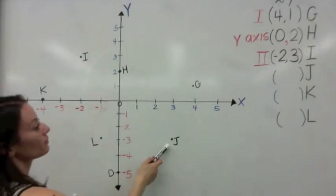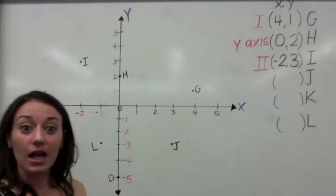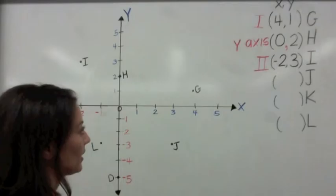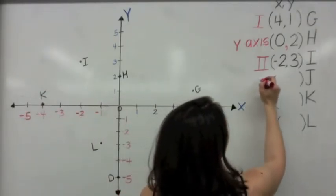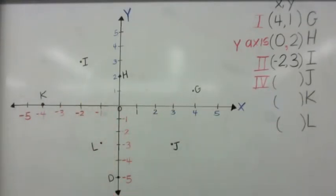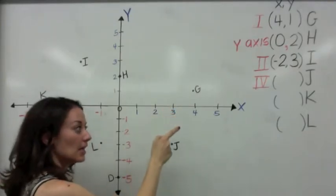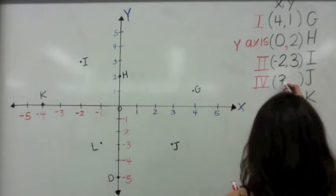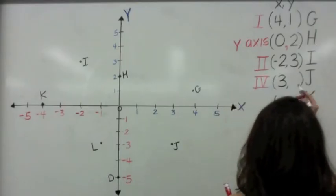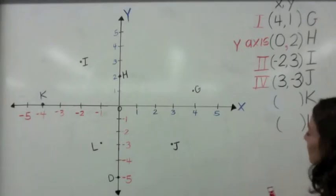What quadrant is J in? It happens to be quadrant 4. In quadrant 4, you start with a positive x and go down to a negative y value. Where does J begin? X is 3, and we go down to negative 3 as well. So J is at (3, negative 3).